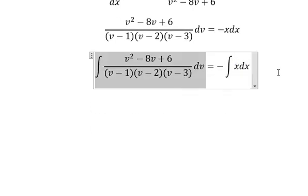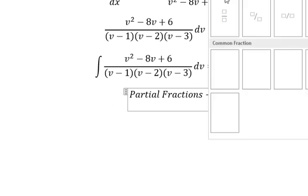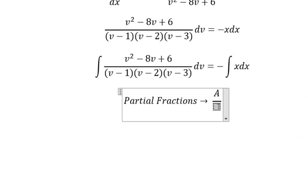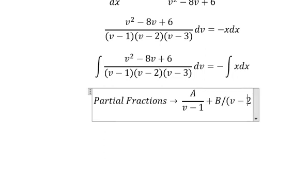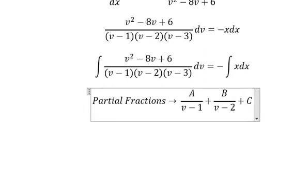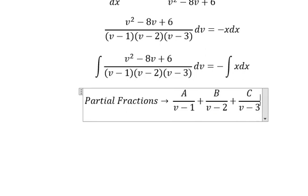This one we do partial fractions. So I will put about A over v minus 1, plus B over v minus 2, plus C over v minus 3. And then we do common denominator.